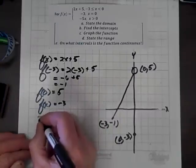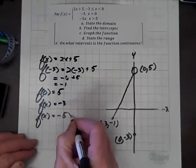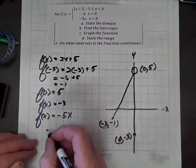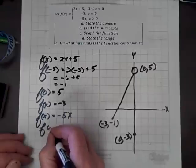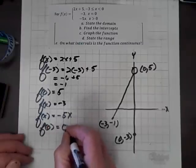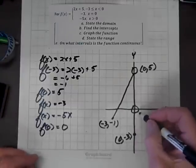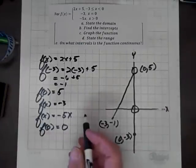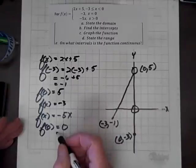Now we'll look at the last part: f(x) = negative 5x, and the domain for this portion is x greater than 0. Let's look at the lower bound — f(0) = 0 — so we'll put an open circle at (0, 0) because we can't include x = 0. We need another point to graph the ray associated with this portion of the piecewise function.